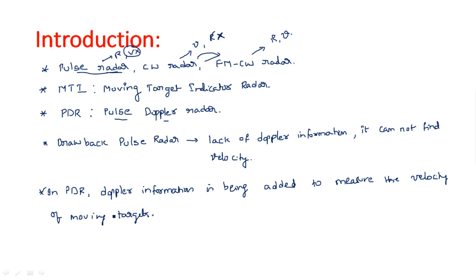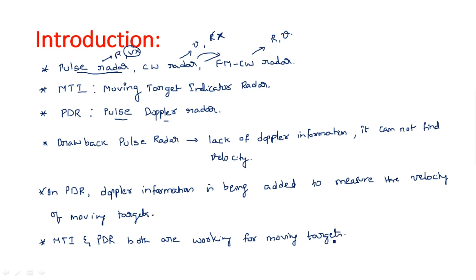In pulse radar we are identifying stationary targets, but MTI radar and pulse Doppler radar concentrate on moving objects. Both MTI and pulse Doppler radar work for moving targets and have similar operation, but there is one difference called blind speed — one suffers from blind speed and the other does not. This will be explained in the coming videos when we go into the individual topics.